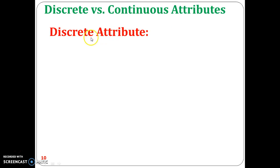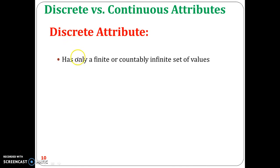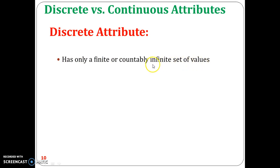First, we will focus on discrete attributes. A discrete attribute has a finite or countably infinite set of values, which may or may not be represented as integers — the values need not be integers alone.